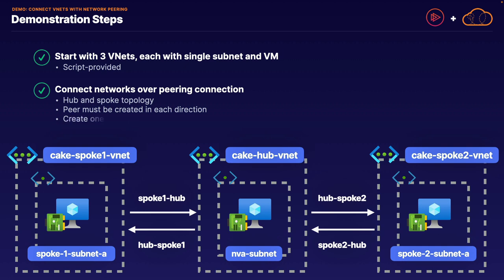In this demonstration, we are going to create one of our peering connections using the portal. However, we will connect the second one using PowerShell, taking special note of some of the options in those PowerShell commands.